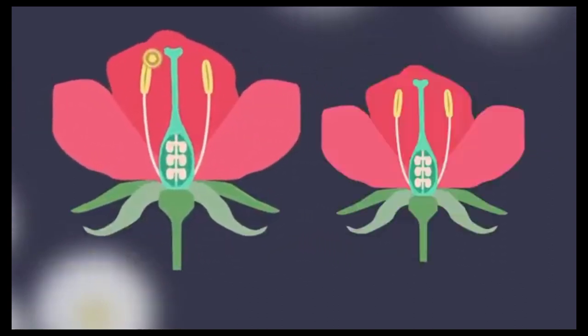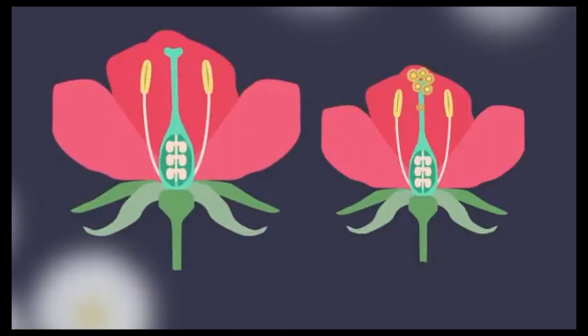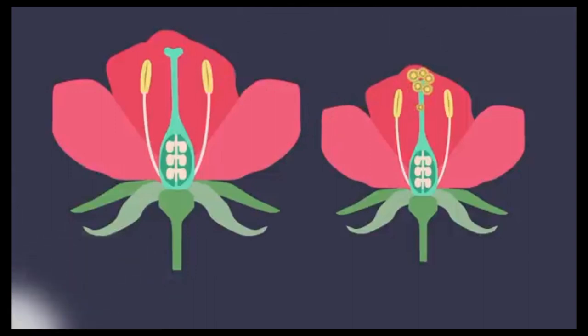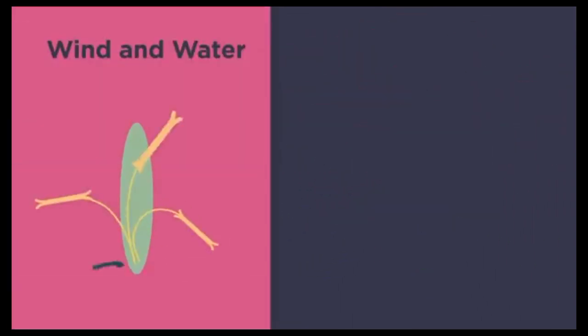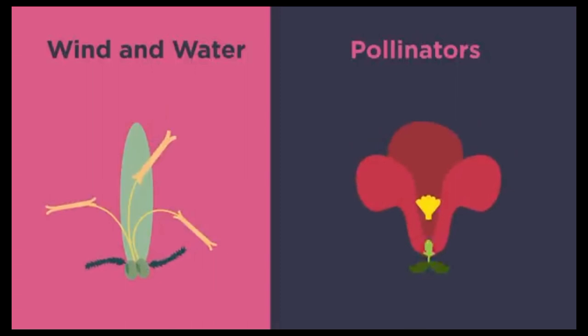So how does pollination work? Pollination is a way to transfer pollen from the male anther of one flower to the female stigma of another. Flowers can be pollinated in different ways — by wind and water, or by pollinators such as insects, birds, and other animals.